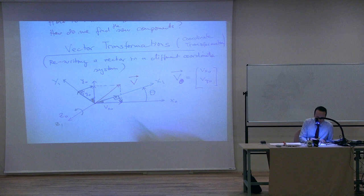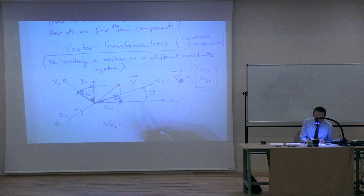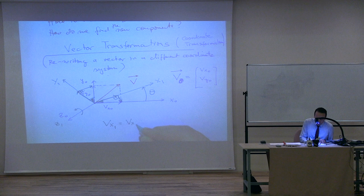So these are the two components needed along x₁ and y₁ to represent the red vector. I can write this in matrix form. The vector [vx₁, vy₁], which is the representation of the red vector in the new coordinate system x₁, y₁, is equal to a matrix of sines and cosines times [vx₀, vy₀]. The matrix is: row 1 = [cos θ, sin θ], row 2 = [−sin θ, cos θ].